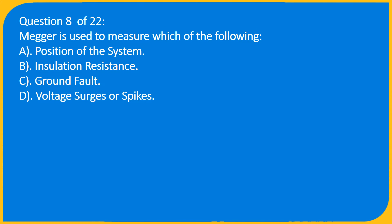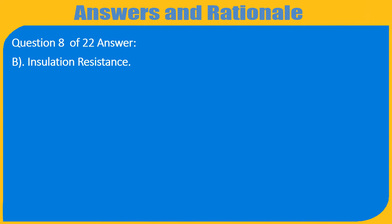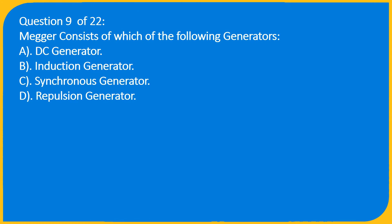Question 8 of 22: A Megger is used to measure which of the following? A. Position of the system, B. Insulation resistance, C. Ground fault, D. Voltage surges or spikes. Answer: B. Insulation resistance.